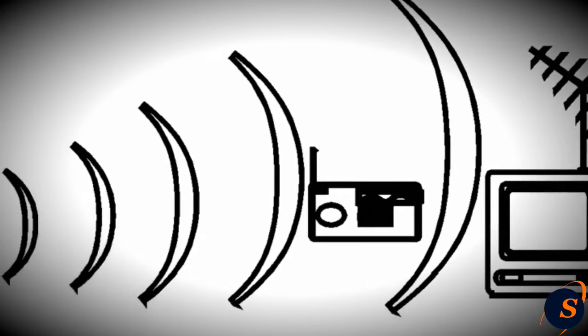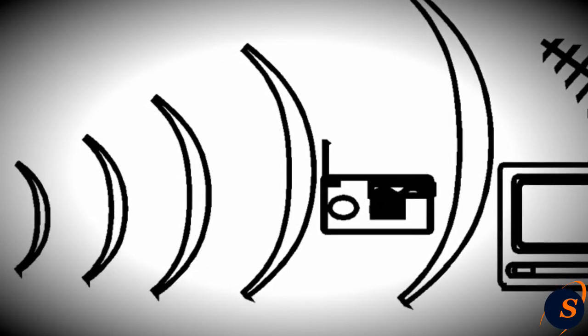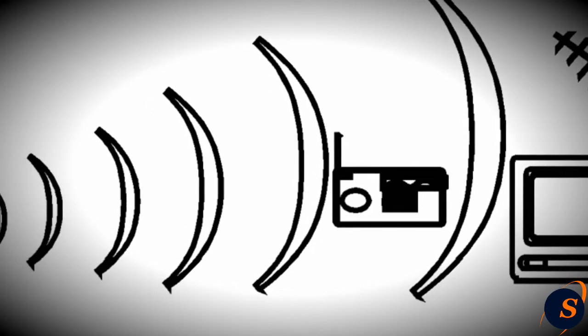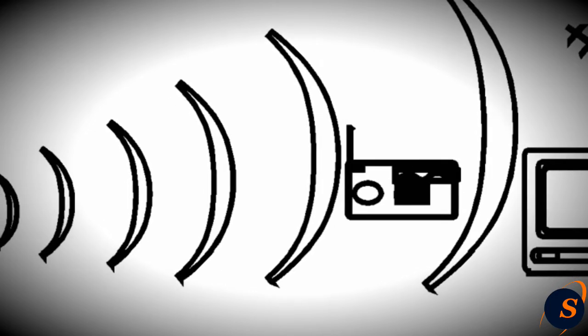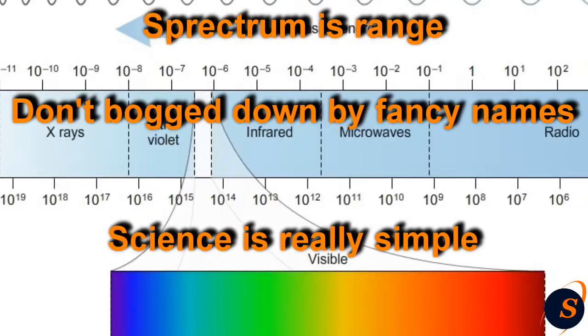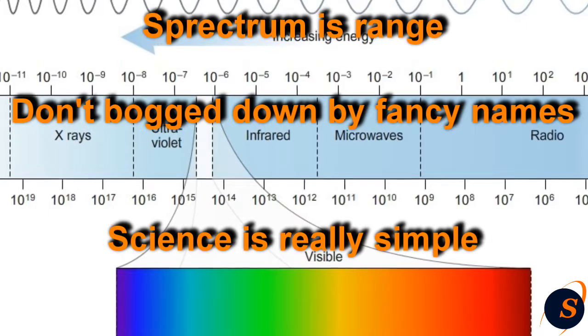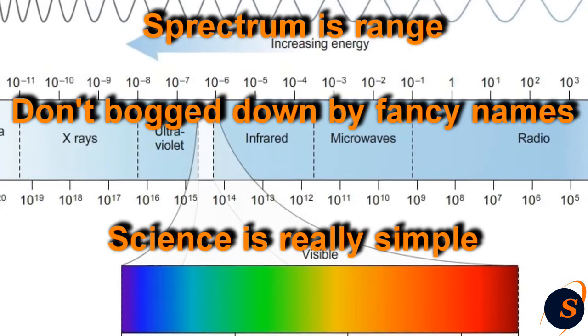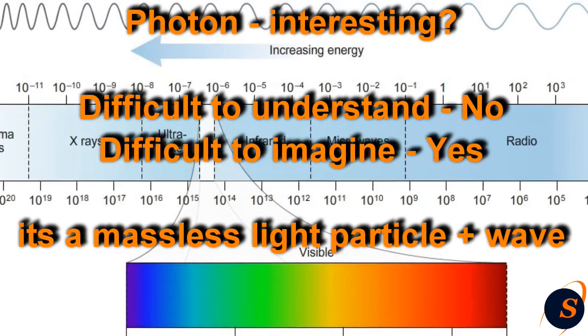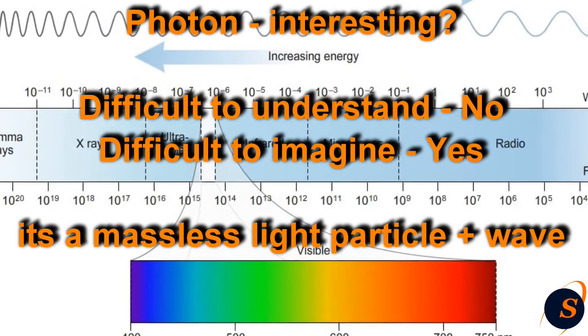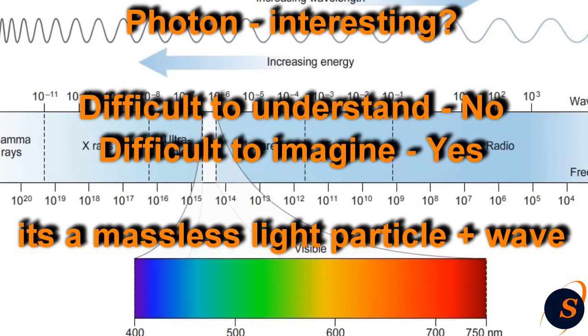Radio waves have the longest wavelength in the electromagnetic spectrum. Now what is electromagnetic spectrum? The electromagnetic spectrum is the range of all types of electromagnetic radiations which are streams of massless particles called photons, each traveling in a wave-like pattern at the speed of light.